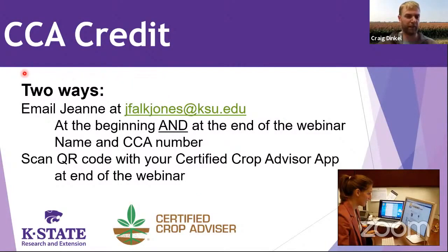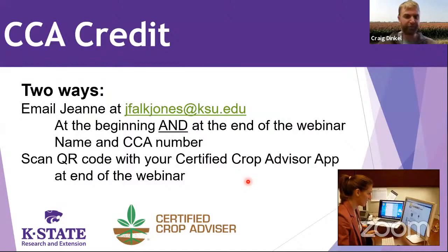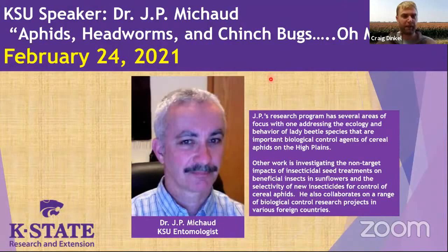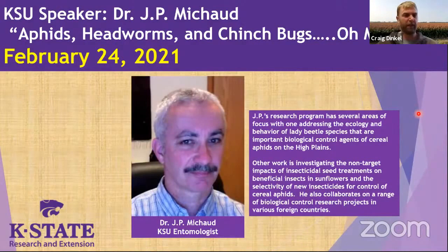If you're here for CCA credits, you can email Jeannie Falk Jones at ksu.edu at the beginning and again at the conclusion of the webinar with your name and CCA number, or we'll have a QR code at the end that you can use your certified crop advisor app to log in and document for credits. Today's speaker is Dr. JP Michaud, an entomologist with K-State Research and Extension based out of the Hays Research Center. We look forward to hearing what he has to say on sorghum insects and control.